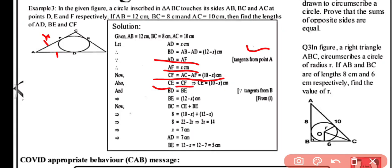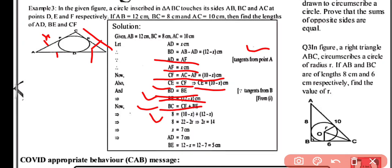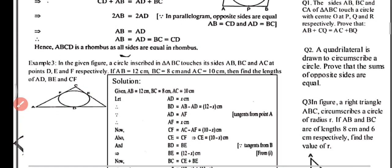Now BC equals CE plus BE, and BC equals 8 cm. So: 8 equals (10 minus x) plus (12 minus x). Simplifying gives x equals 7. Therefore AD equals 7 cm, BE equals 12 minus 7 equals 5 cm, and CF equals 10 minus 7 equals 3 cm. This completes example number three.